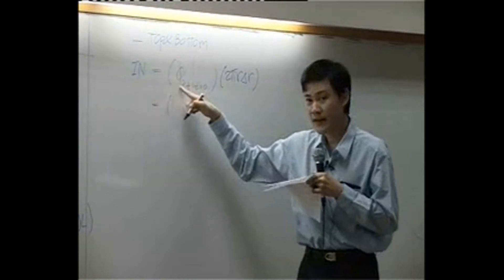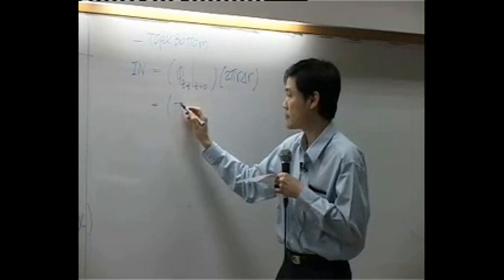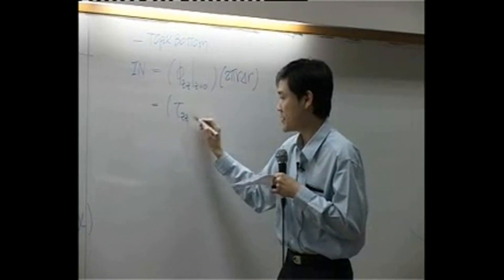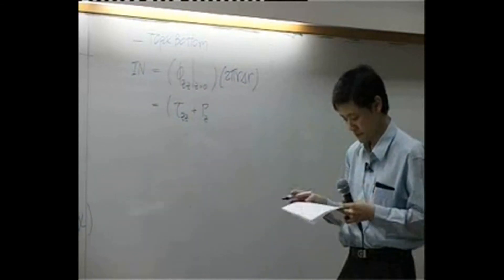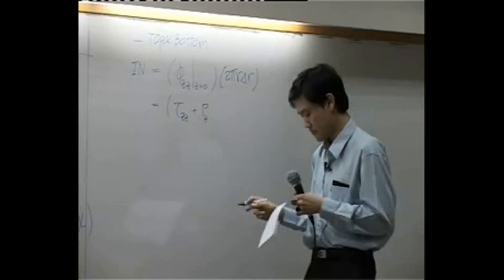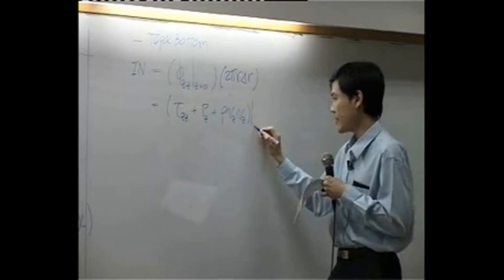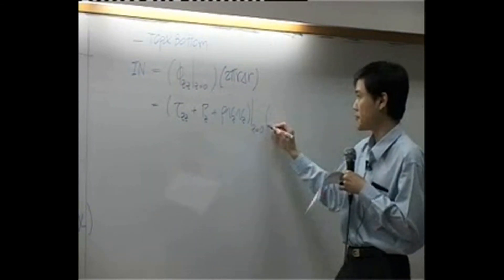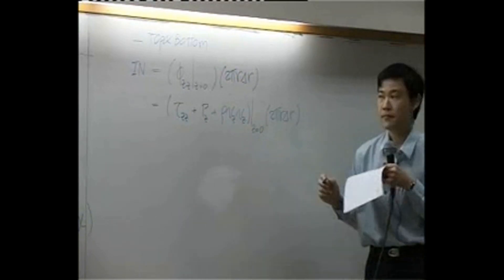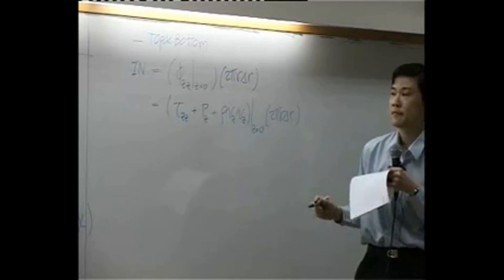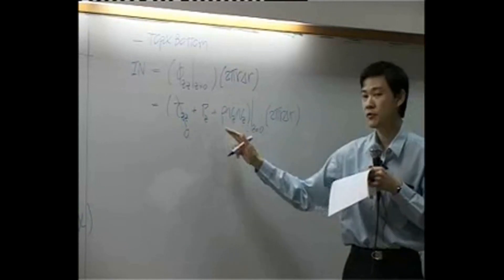The combined flux φ_cz consists of three terms: tau_zz, plus pressure in the Z-direction, plus rho*vz*vz, all evaluated at z equal to zero. One of these terms has already been determined to be zero, so only two terms remain.